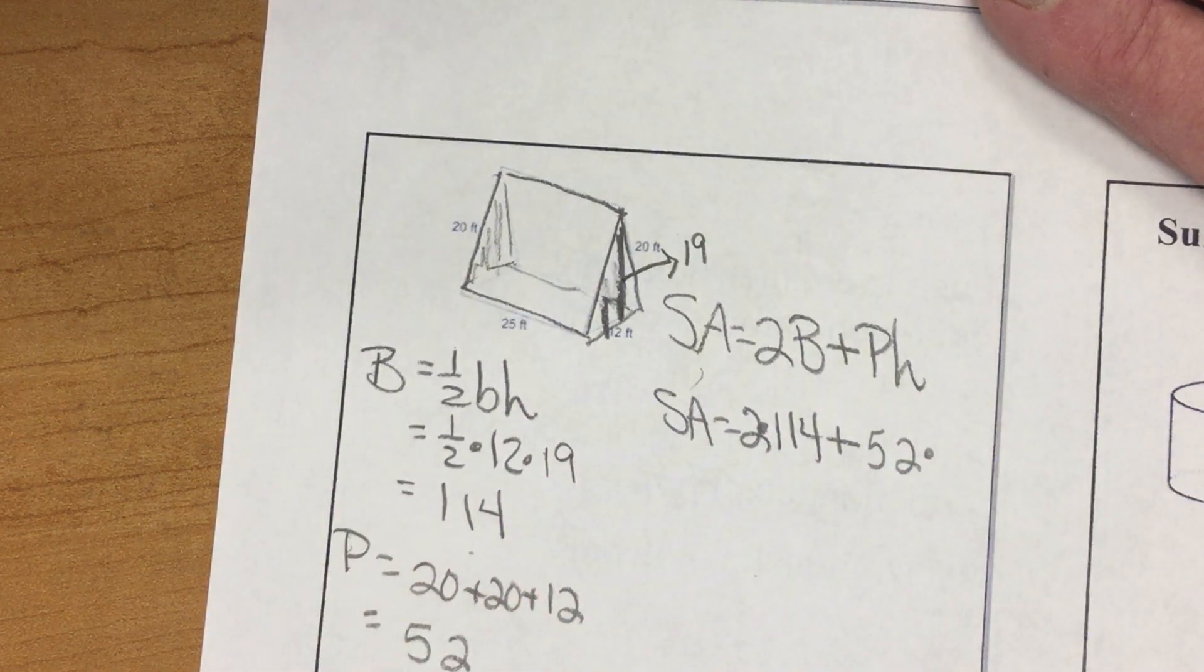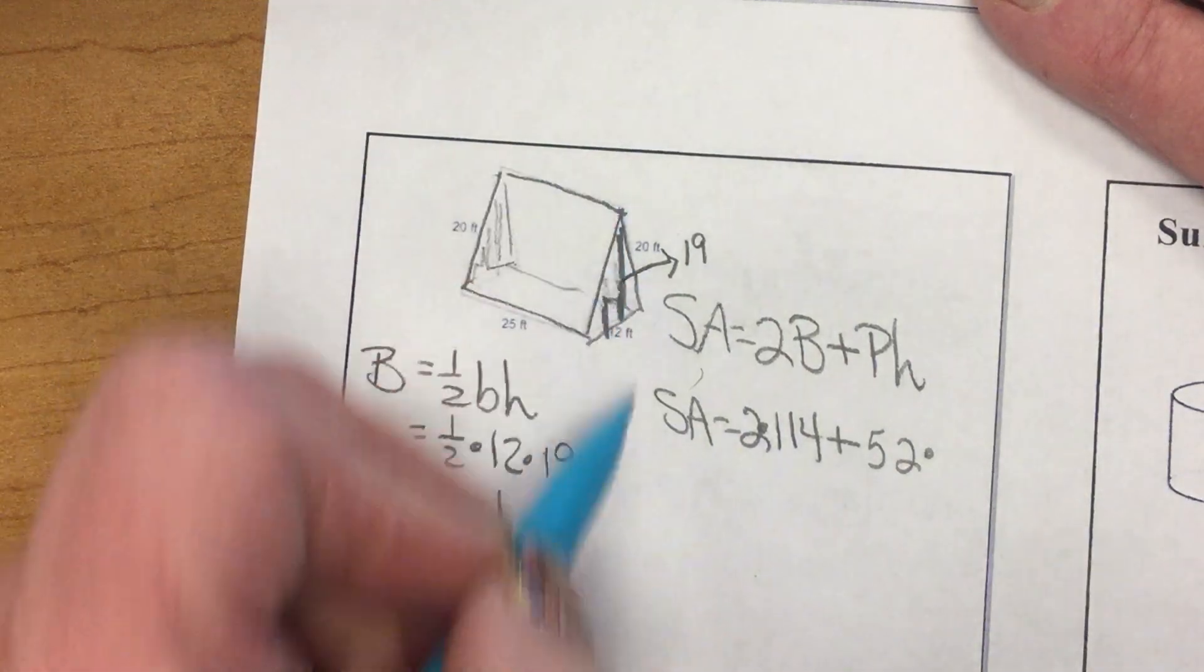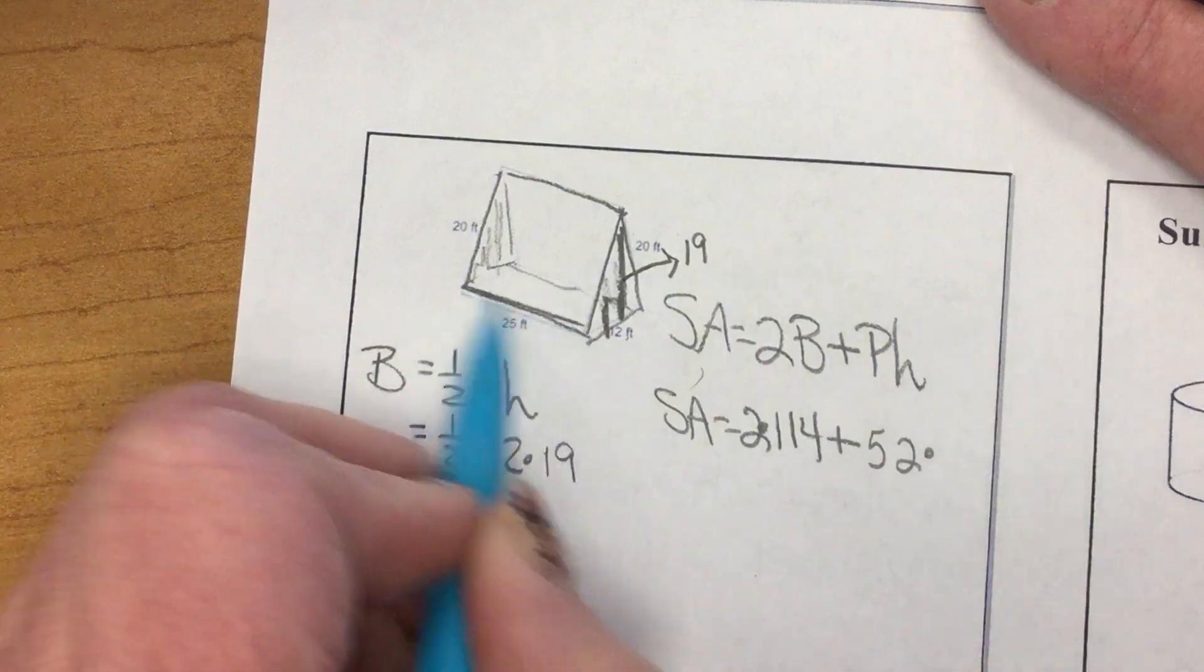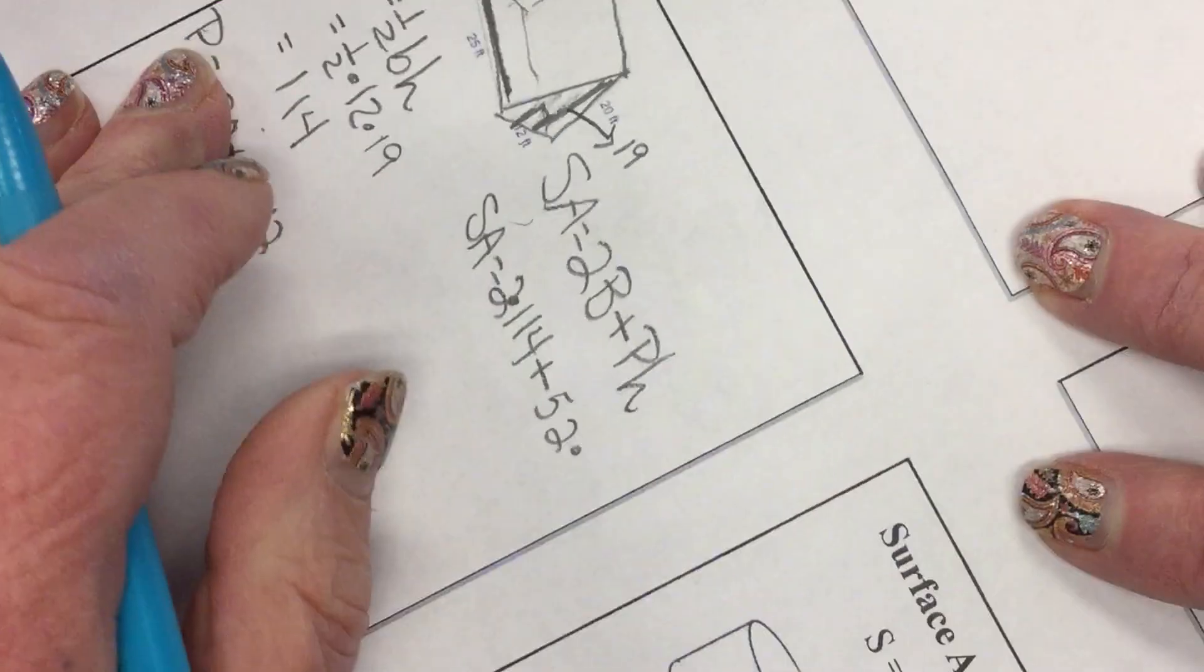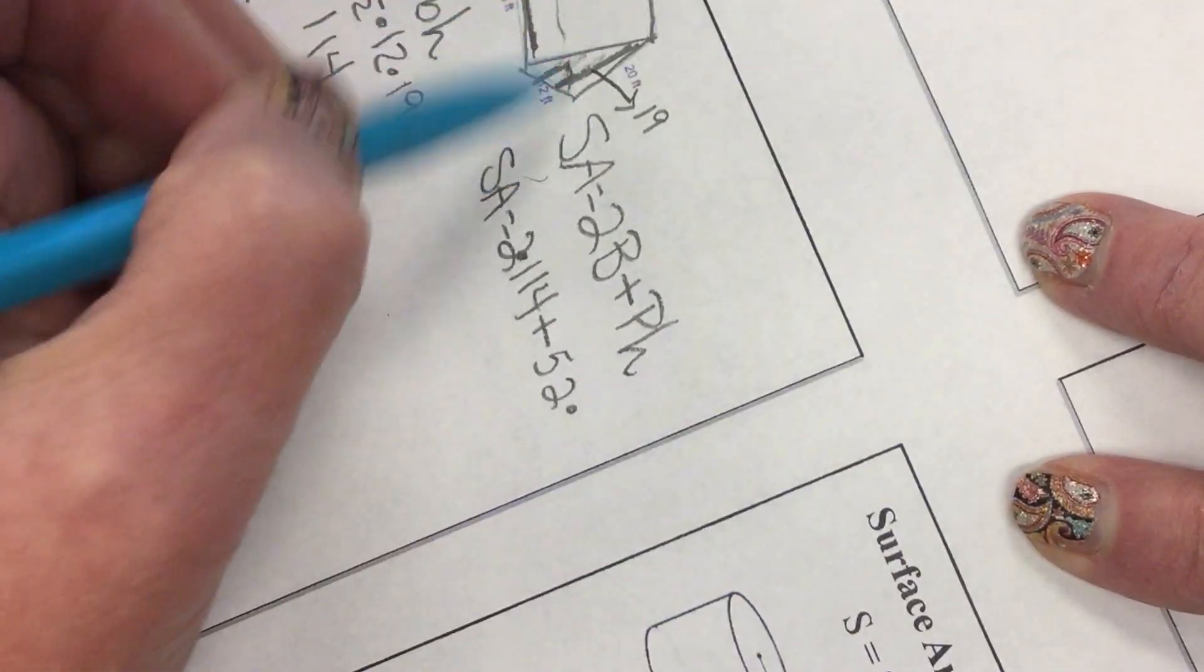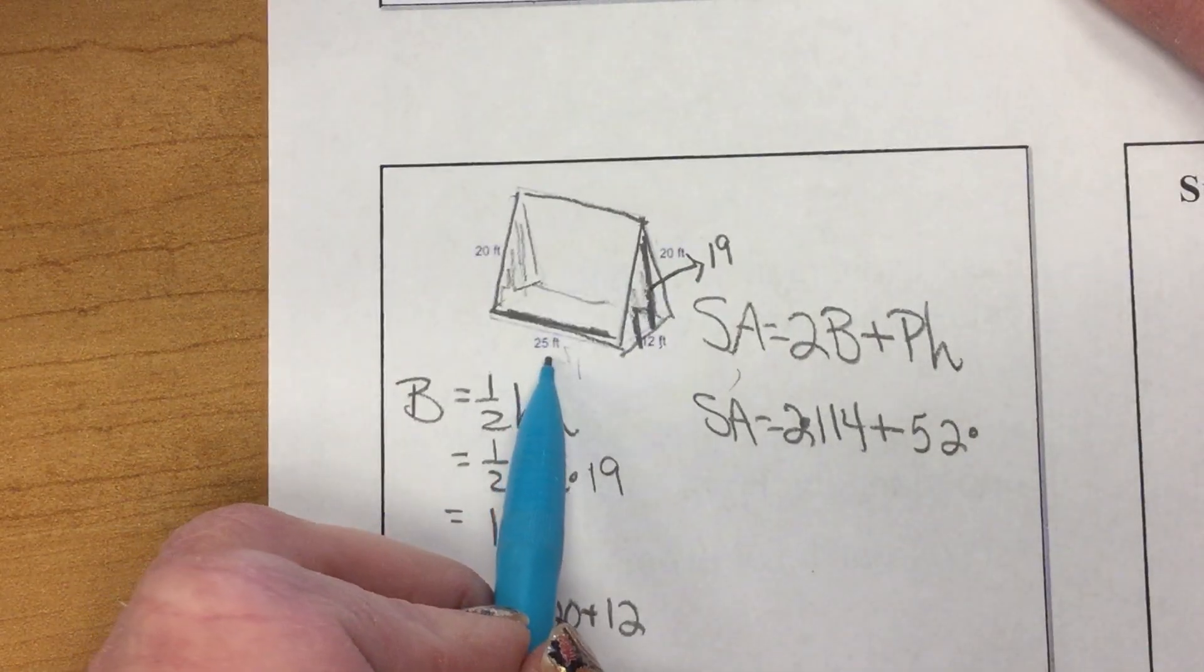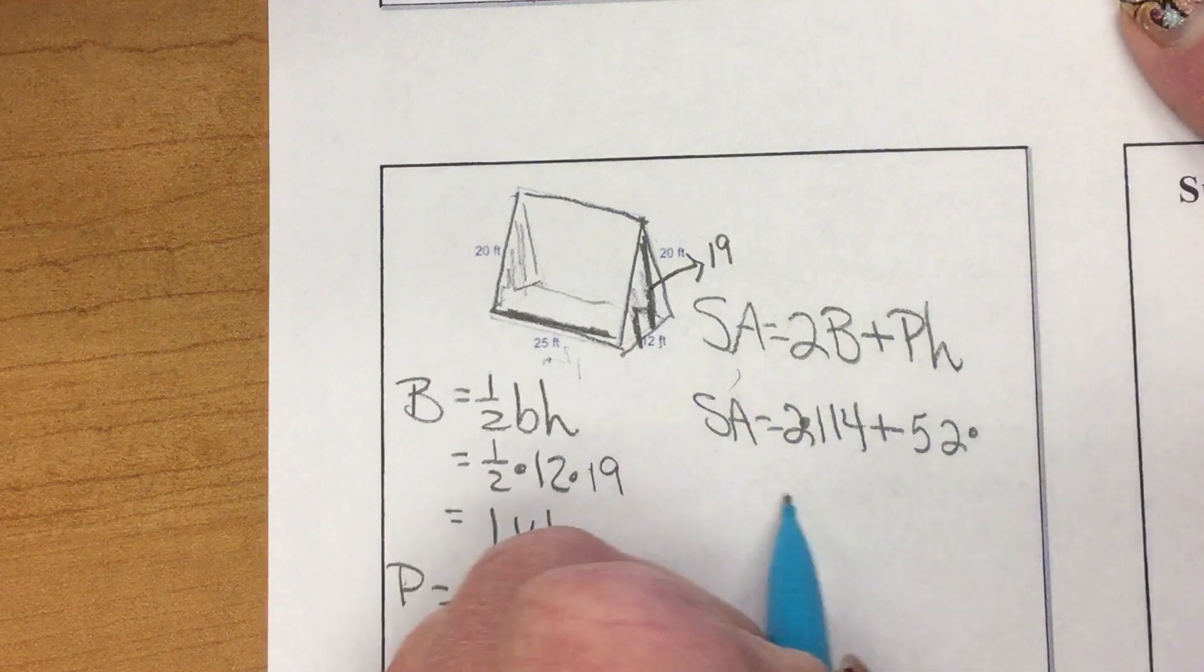Now, the height of the pyramid or prism is not the 19. That's the height of the base. The height is this distance, because remember, it's like it tipped over. So, we have to do height. Sometimes height is on the bottom, 25.